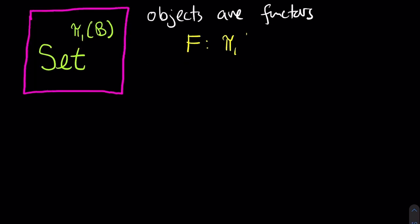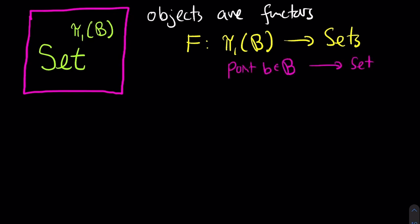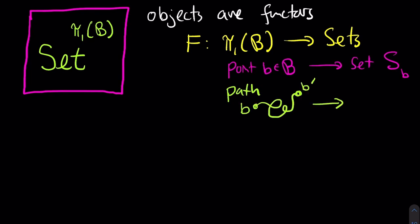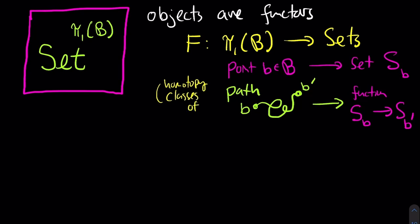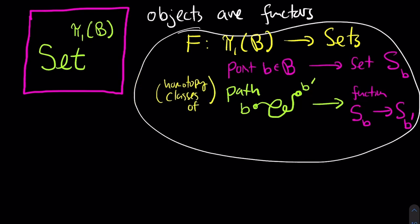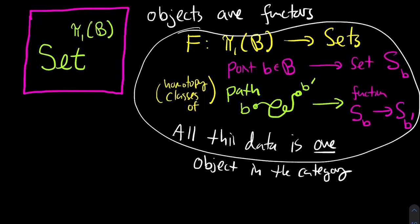What does one functor from the fundamental groupoid π₁(B) into Set look like? For each point b, you get a set, call it S_b. For each path from b to b prime, you get a function from S_b to S_{b'}, and that function must be independent of the choice of path within the homotopy class. All that data is just one object in this category.